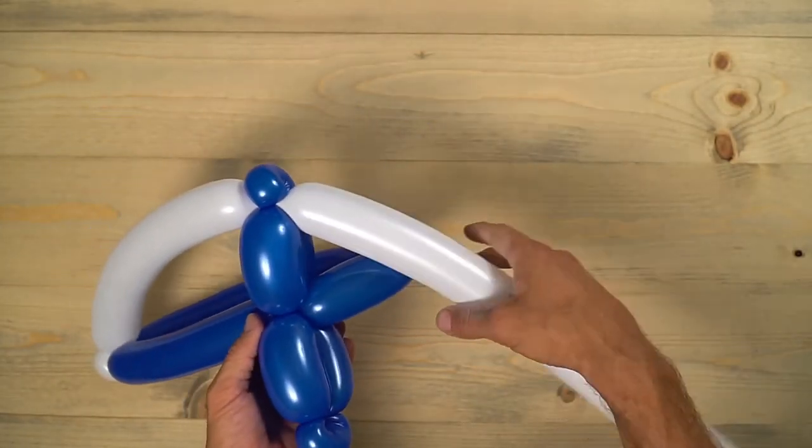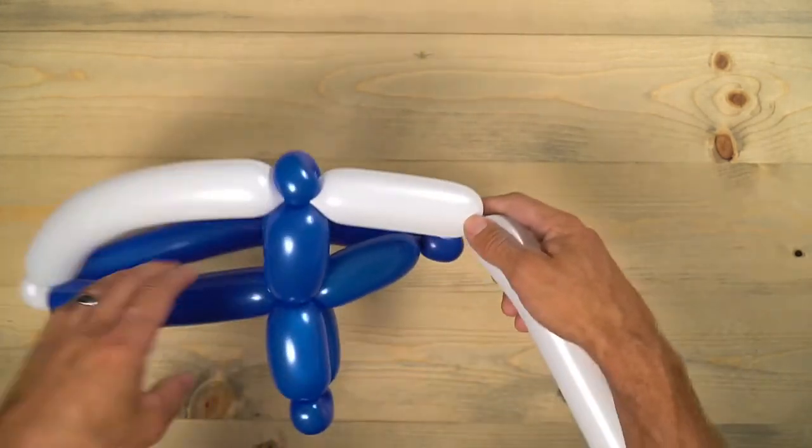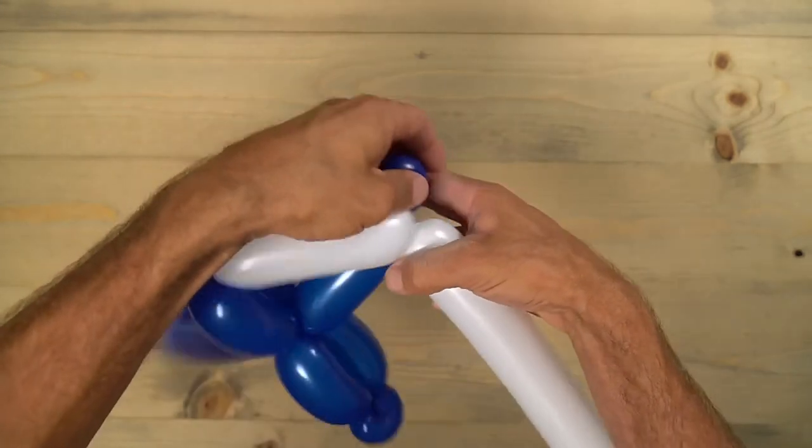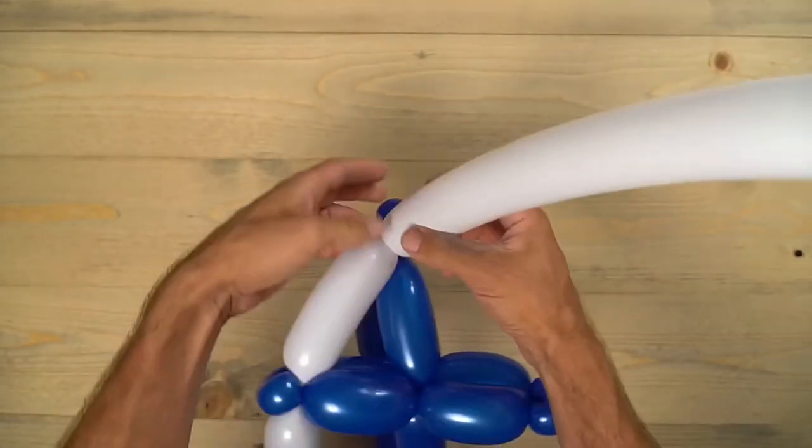Now we're going to continue on around the shield. And then just eyeball where you like it to be. Just make sure you don't make this too short. Otherwise it pulls that bottom part of the shield over to one side too much.